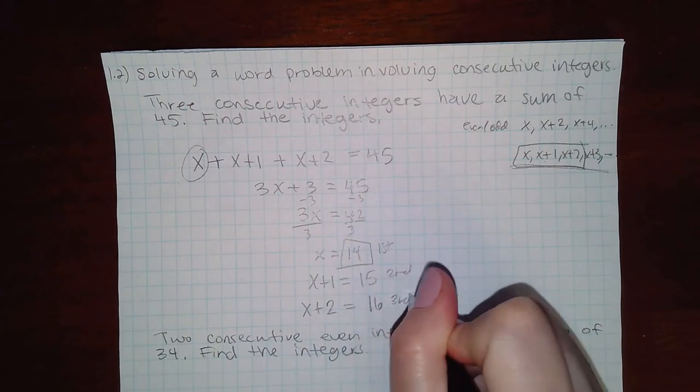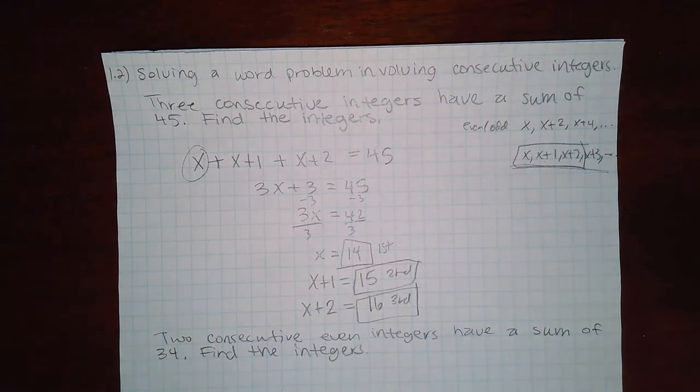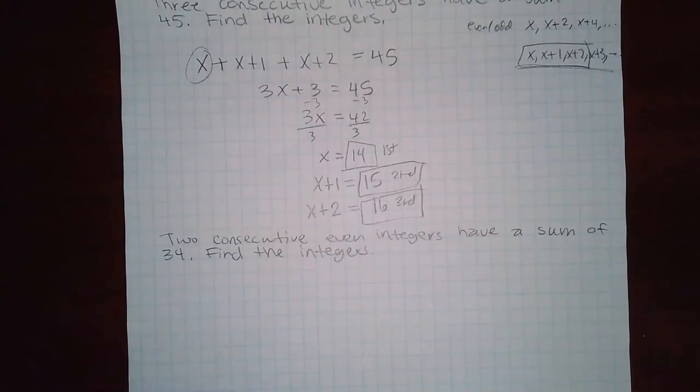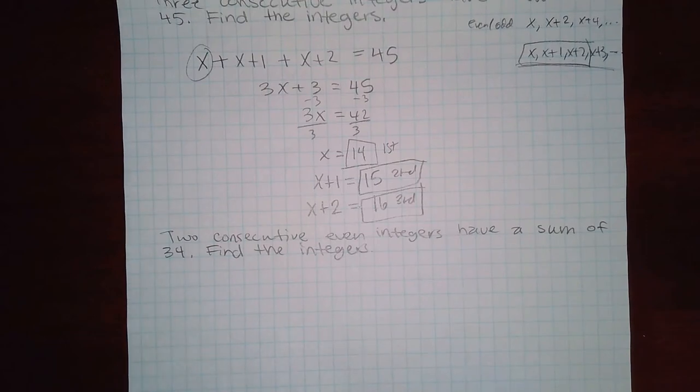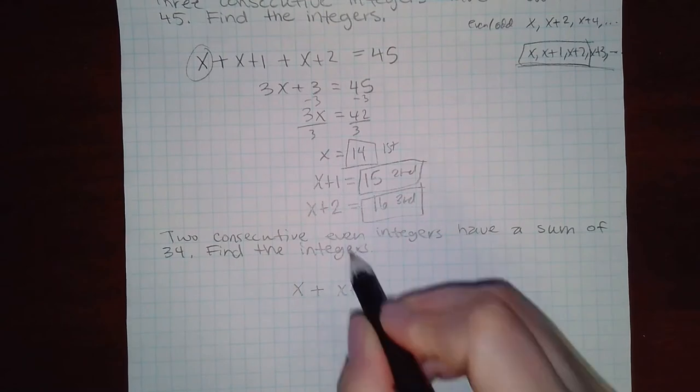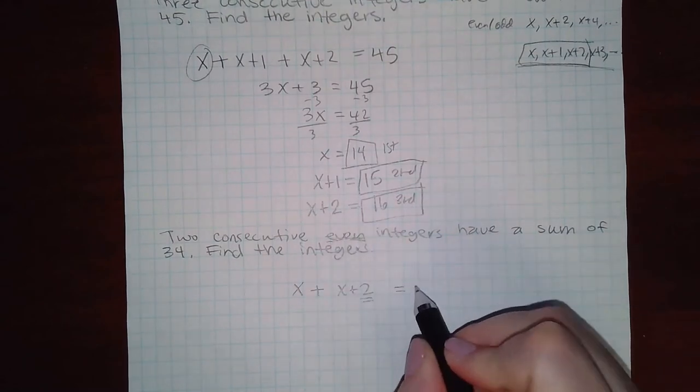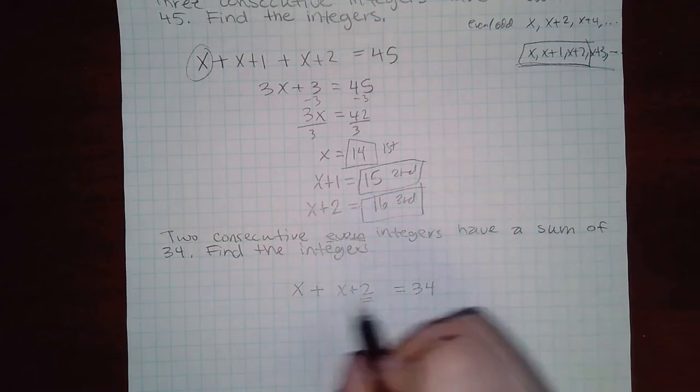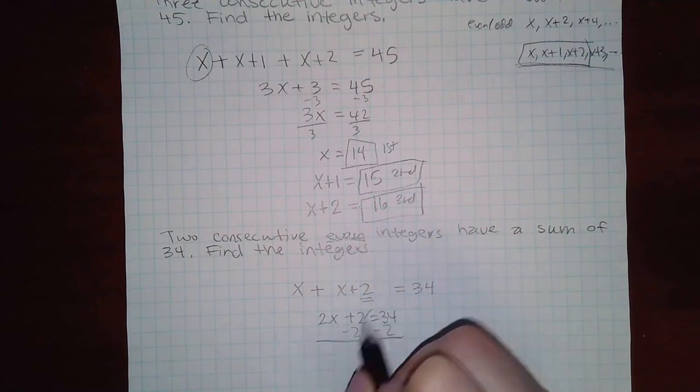Now let's see the next problem. It says two consecutive even integers have a sum of 34, so you have one page plus the second even page which is why I have to add 2 should equal 34. If I combine my like terms I have 2x plus 2 equal to 34. If I start to solve for x...